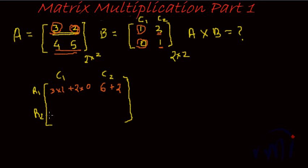So row 2, column 1 would be 4 into 1 plus 5 into 0, and similarly here 4 into 2, which is 8, 5 into 1, which is 1 plus 5. So your result would be 3, 8, 4, and 13.